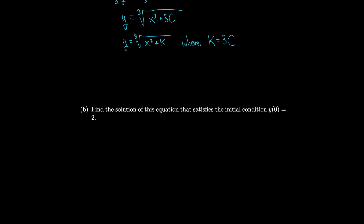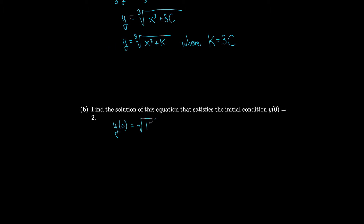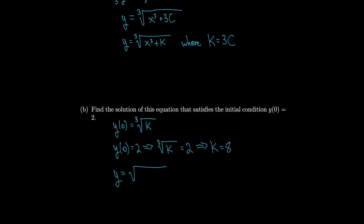Let's find the solution of this equation that satisfies the initial condition y(0) = 2. So that'll decide what k is. We plug in 0 for x, giving us the cube root of 0 cubed plus k, which is just the cube root of k. But they told us y(0) = 2, so the cube root of k equals 2, implying k = 8. So our equation becomes y equals the cube root of x cubed plus 8.